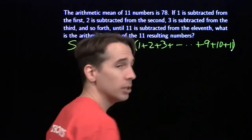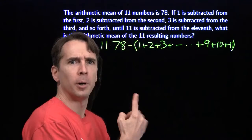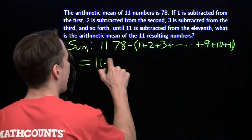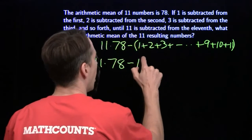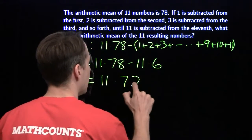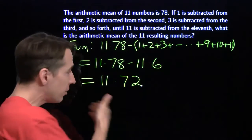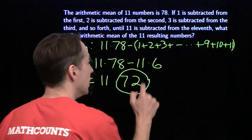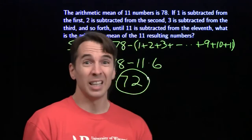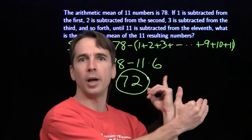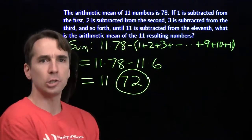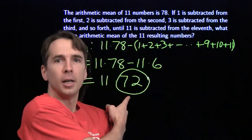So when you add a bunch of consecutive numbers, it's just like adding the middle number over and over again. These 11 numbers in a row add up to 11 copies of the middle number. Factoring out the 11, the sum of 1 through 11 is 11 times 6, which is 66. So subtracting 1 through 11 is just like subtracting 6 every single time. If you subtract 6 from each of our group of numbers that average 78, sure enough, you get an average of 72.